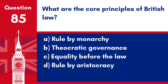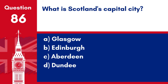Question 85. What are the core principles of British law? a. Rule by monarchy. b. Theocratic governance. c. Equality before the law. d. Rule by aristocracy. Answer: c. Equality before the law. One of the core principles of British law is equality before the law, ensuring all individuals are treated equally within the legal system.